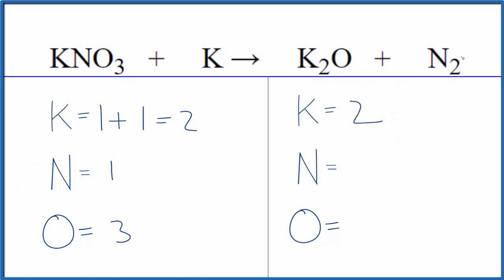On the product side, we have two potassiums, two nitrogens, and then just the one oxygen. Because we have potassium by itself here, let's leave that until last.